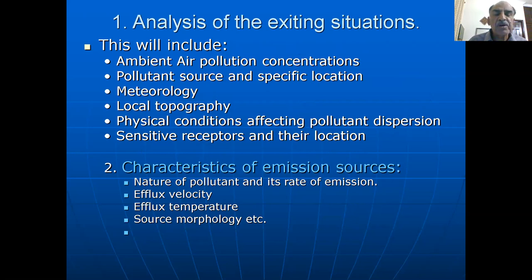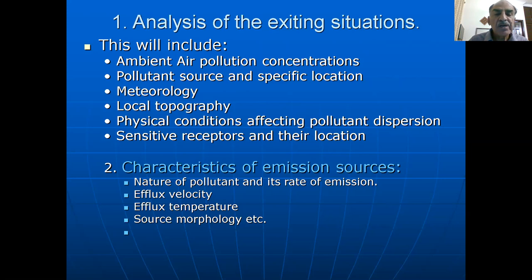Local topography is also very important because it plays a significant role. For example, in hilly areas the smoke impact is very low as it is intercepted by the uneven landscape. But in plain areas, since there is no interception from the landscape, we can have a very larger extent of smoke. Physical conditions affecting pollutant dispersion are also important, as are sensitive receptors and their location — for example, children, aged populations, old houses, or a TB hospital where people are being treated for pulmonary infections. These are people who are very sensitive receptors to air pollution.